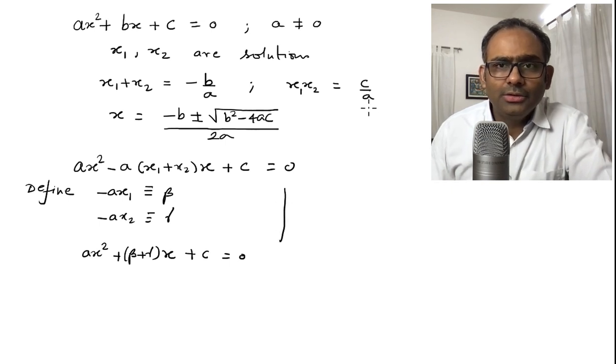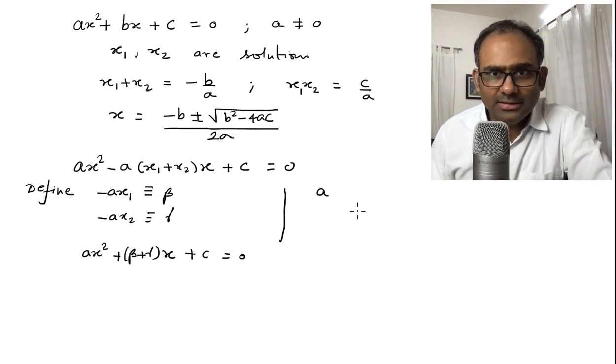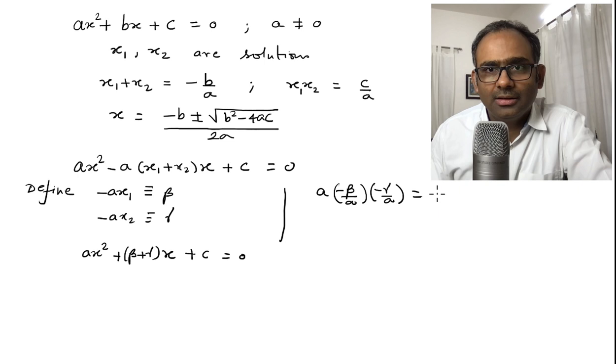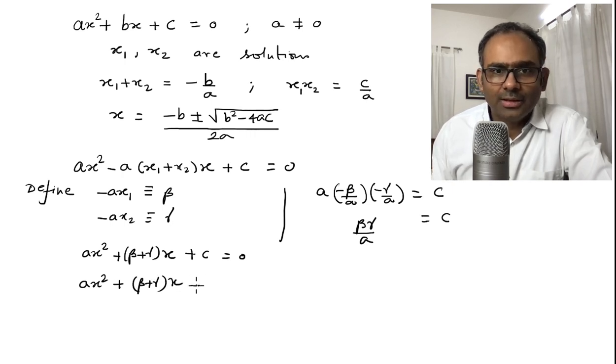Also, now we will use this relation that the product of the two solutions is c over a. Let us plug these definitions here. So, you get a times x1, but what is x1? x1 is minus beta over a and what is x2? That is minus gamma over a and this is c. So, c is equal to beta gamma over a. I will substitute that thing here which gives me ax square plus beta plus gamma x plus beta gamma over a is equal to 0.